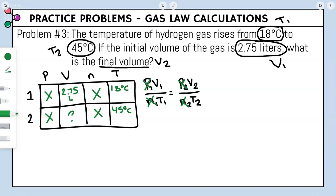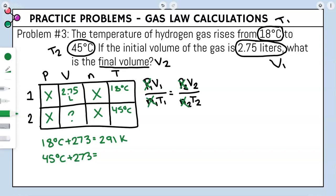Checking units: both temperatures are in Celsius, but in gas law calculations we can never plug in Celsius — we must always convert to Kelvin by adding 273. So 18°C becomes 291 K and 45°C becomes 318 K. These are the new T1 and T2 values we will use.